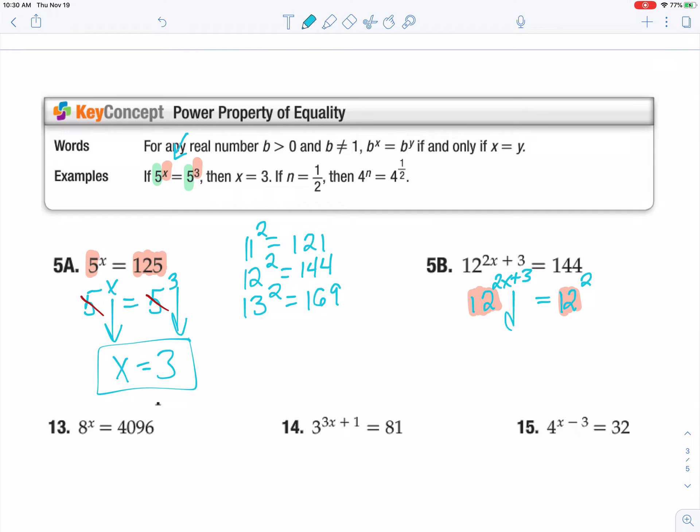Since they're the same, that means I can just bring down the exponents only. And this time, it wasn't just as simple x equals 2. It's a 2x plus 3 equals 2.